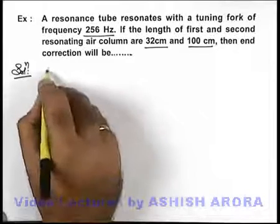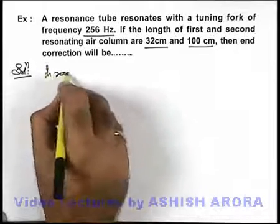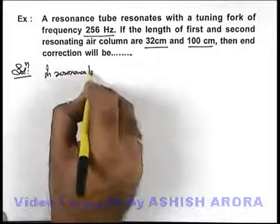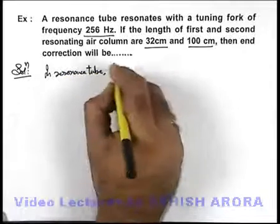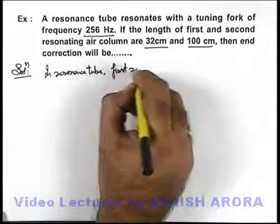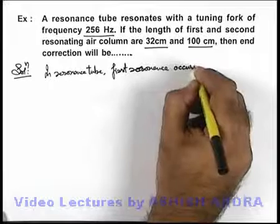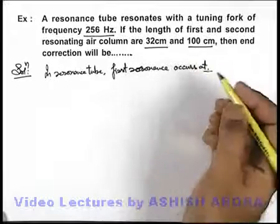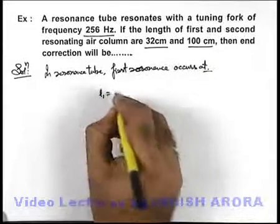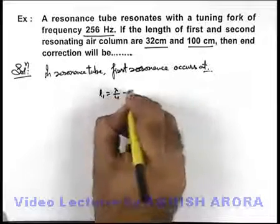So here we can say in a resonance tube, first resonance occurs at - we know well when length L1 is equal to lambda by four minus e.